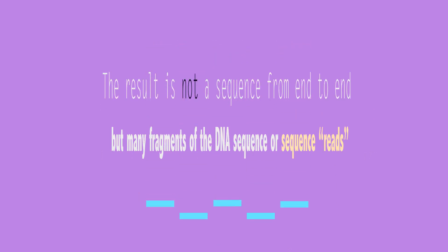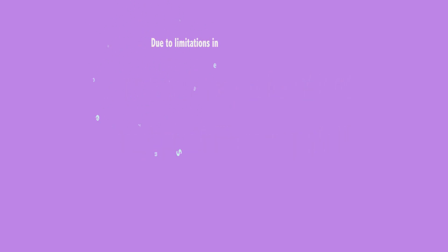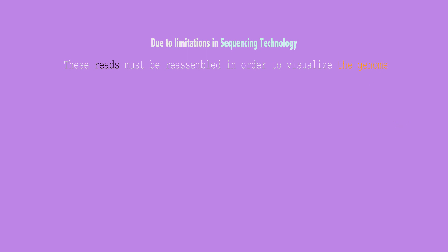So when a genome is sequenced, the result is not a sequence from end to end, but many fragments of the DNA sequence, or sequence reads. The whole genome cannot be sequenced from end to end due to limitations in sequencing technology. So these reads must be reassembled in order to visualize the genome.